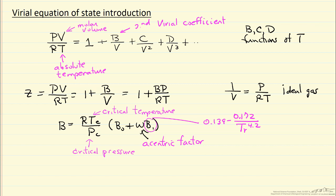So B, as we mentioned, is a function of temperature. The reduced temperature is the temperature of the system divided by the critical temperature. And then B0 is, again, a function of the reduced temperature raised to the 1.6 power.